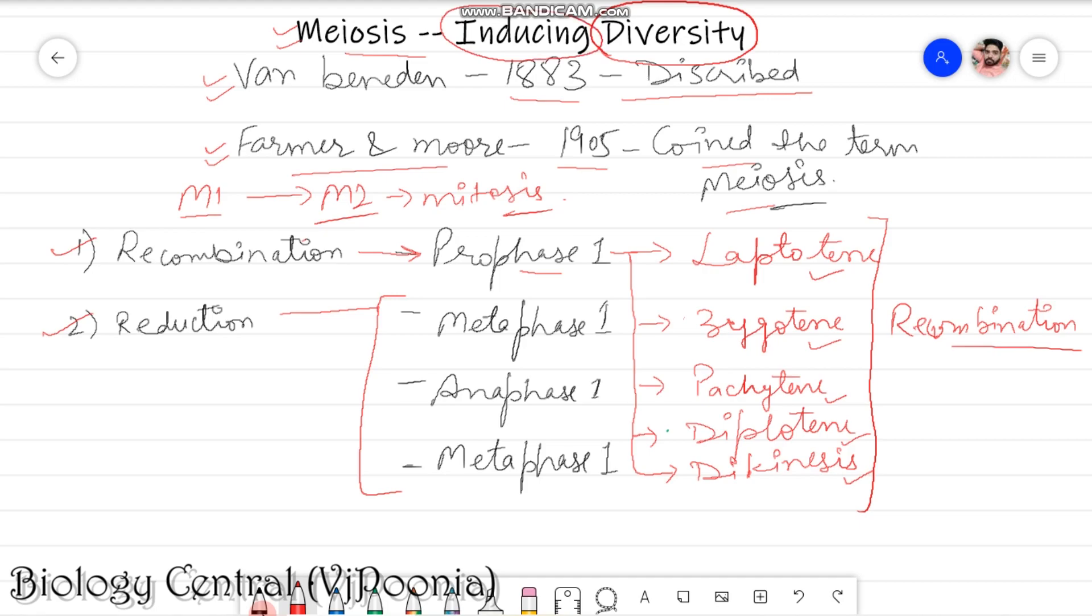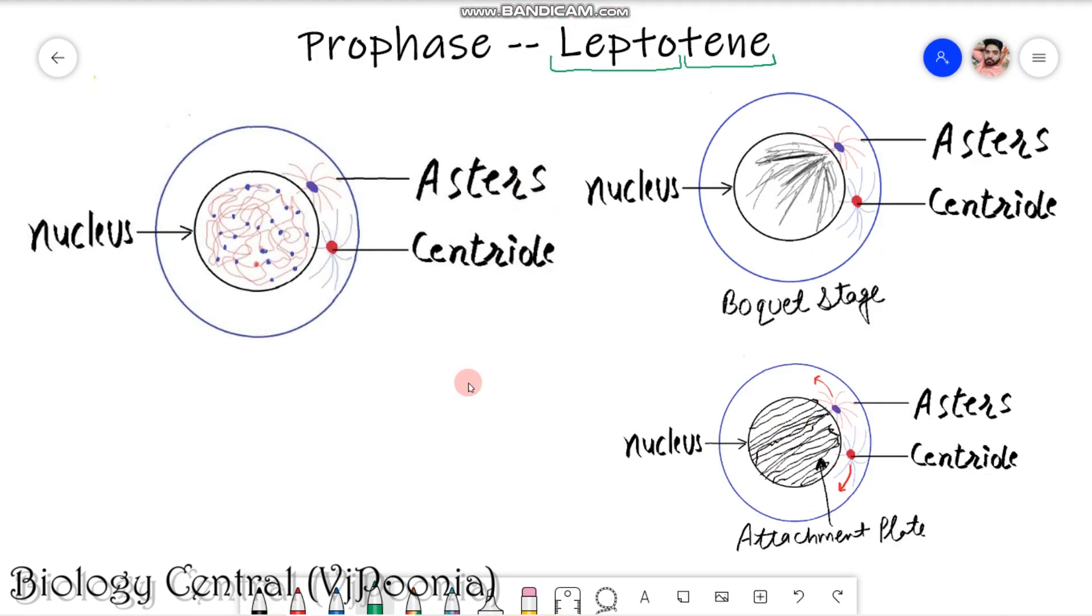Let's talk about the sub-phases of prophase 1 one by one, and the first stage we have is Leptotene. Talking about prophase, prophase is the longest phase which is around 150 times more than mitosis. In this prophase, the very first stage is Leptotene. Lapto means thin and tene means thread. It completes in three stages.